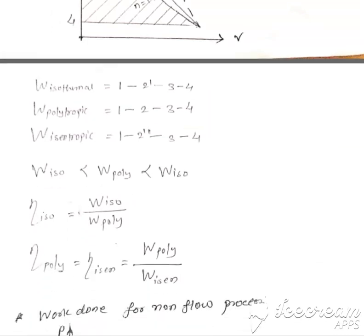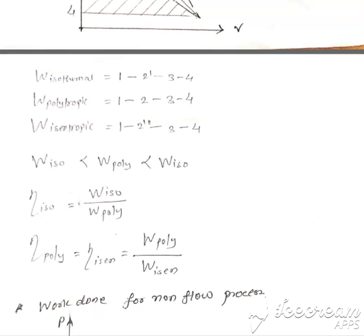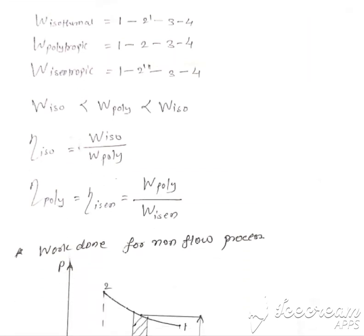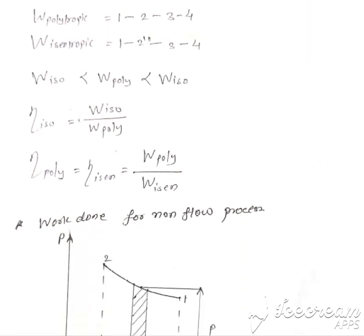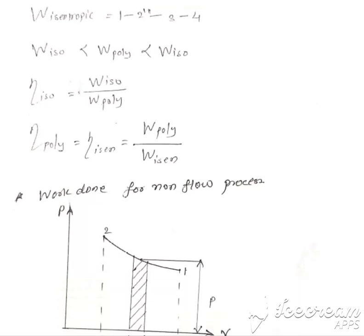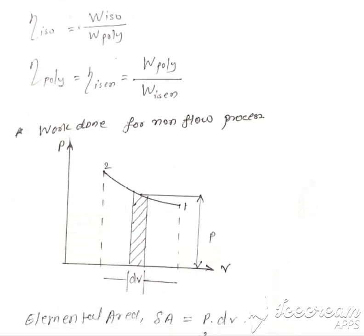Therefore, isothermal efficiency is the ratio of isothermal work to the polytropic work. And the polytropic efficiency and isentropic efficiency is the ratio of polytropic work to the isentropic work.